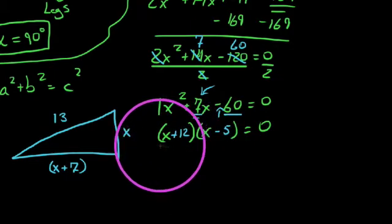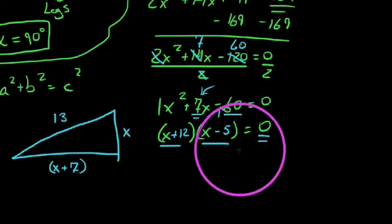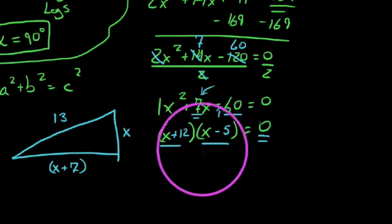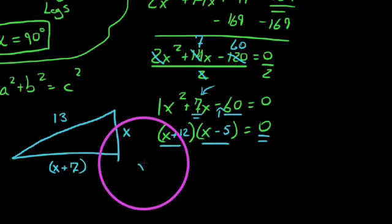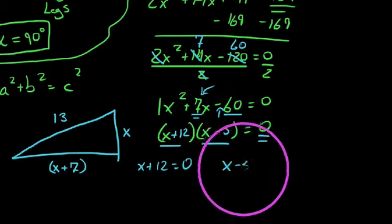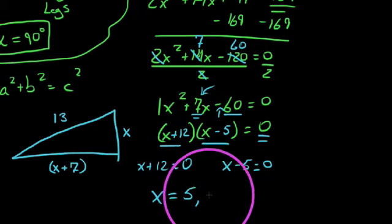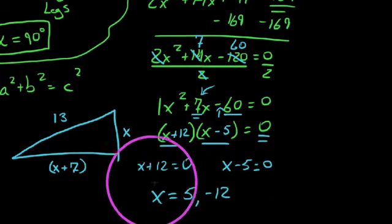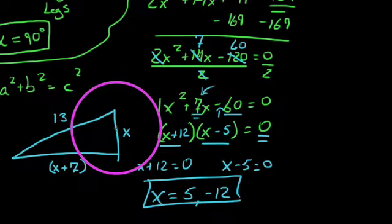So now that we've got this, we can say that this factor times this factor equals 0. And any time you take two things and multiply them out and you get 0, then one of them must have been 0. So now we can set individually each one of those equal to 0. And I guarantee you will see problems like this in trig. So we have 5 and negative 12, and we should label this as units long.